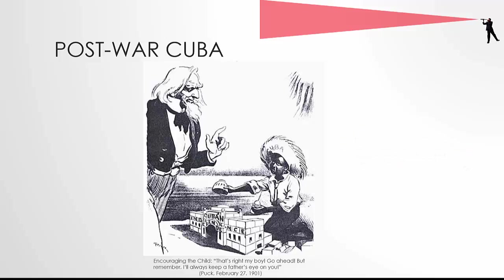To its credit, the Cuban Constitutional Convention refused to include this provision and held out for a number of months. Eventually, though, the political and economic pressure from the U.S. government and the continued presence of U.S. soldiers in Cuba forced the members of the Convention to add these provisions to its constitution. The last of the American forces would withdraw from Cuba in 1902, though sadly they would return in 1906.